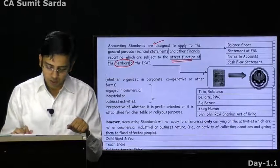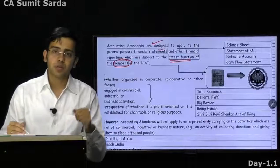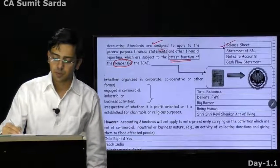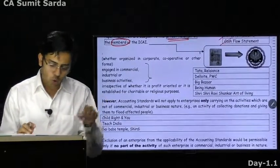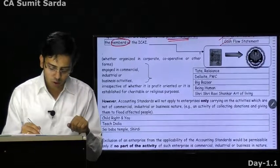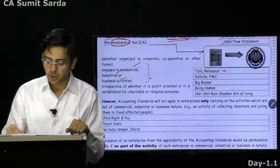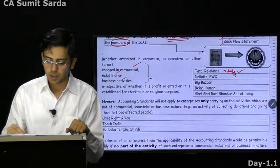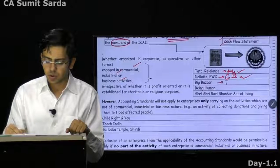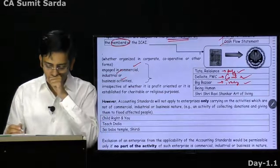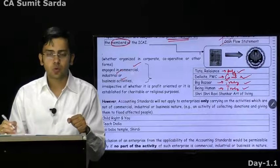Because the Act says accounting standards will prevail over Schedule 3, we say accounting standards will prevail only over Schedule 3 — nothing else. Attestation is required for general purpose financial statements: balance sheet, statement of P&L, notes to accounts, cash flow statement. Accounting standards are required to be followed by those engaged in commercial, industrial, or business activity. Tata Reliance — manufacturing activity, AS required. Deloitte/PwC — commercial activity, AS required. Big Bazaar — trading activity, AS required. Being Human — again a trading activity, required to follow accounting standards.